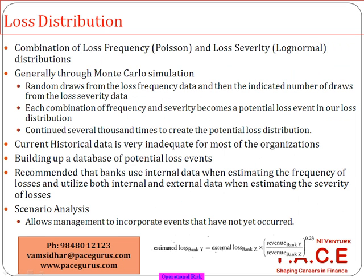Loss frequency is generally modeled using a Poisson distribution, and loss severity using a log-normal distribution. Using historical data, people perform a Monte Carlo simulation. Similar to how we did Monte Carlo simulation for VaR assessment — taking 250 days of data, pulling 100 records randomly and computing the top 1% or top 5% scenario — the same approach is applied here for operational risk.